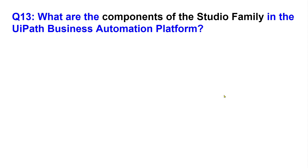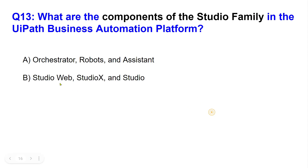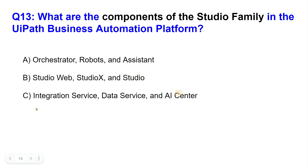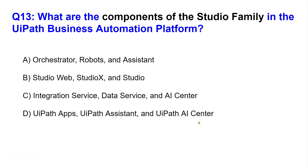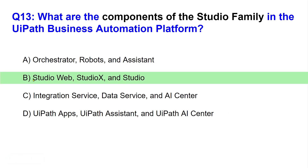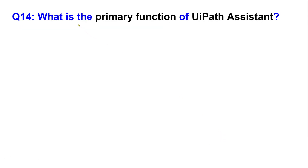Next question: What are the components of Studio Family in the UiPath business automation platform? Options: A) Orchestrator, Robot, and Assistant, B) Studio Web, Studio X, Studio, C) Integration Service, Data Service, AI Center, D) UiPath Apps, Assistant, and AI Center. This is a pretty easy one — take your time. The answer is B.